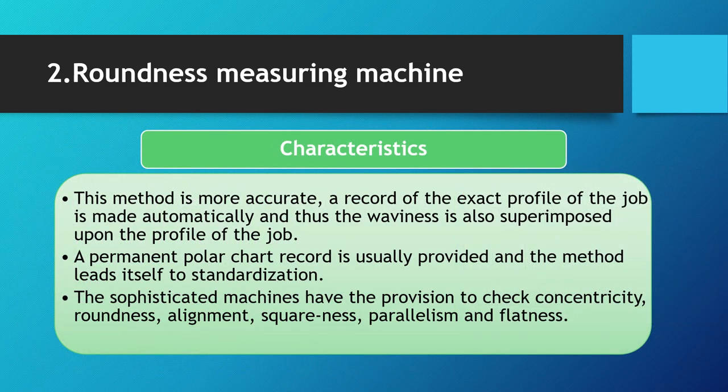Characteristics of the roundness measuring machine: it gives an exact automatic record of the profile of the job, with waviness superimposed on the profile. A permanent polar chart record is provided and the method lends itself to standardization. The stylus is the key element that makes this method more accurate than the V-block method. This sophisticated machine can also check concentricity, roundness, alignment, squareness, parallelism, and flatness of a component.